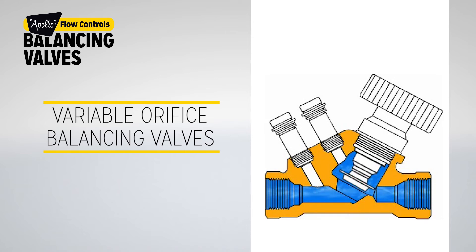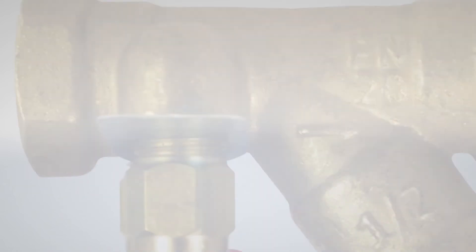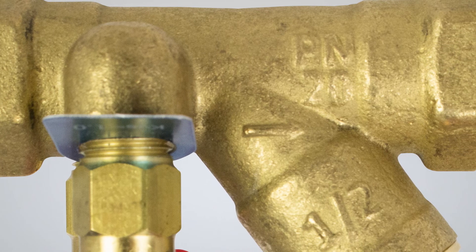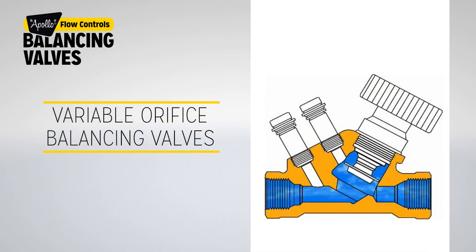The measuring accuracy of the variable orifice valve is adversely affected by this principle; the valve is accurate to plus or minus 15 percent dependent on the opening position. The valve is unidirectional, and the direction of the flow arrow on the valve body should be respected. The setting procedure is a time-consuming process to correctly set the valve at the balancing stage.